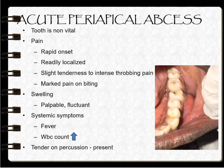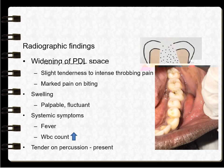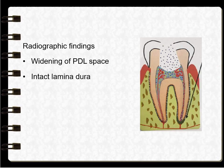The patient may have fever, the white blood cell count gets increased, and tenderness on percussion is present in acute periapical abscess. In radiographic findings, there may be widening of the periodontal ligament space and the lamina dura is intact.